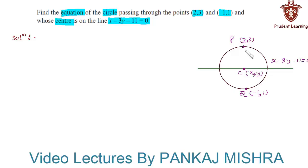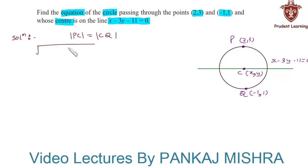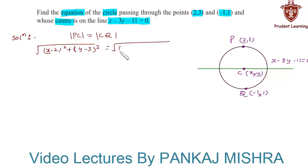We know that distance PC is equal to distance CQ, since both are the radius of the circle. So mod of PC equals mod of CQ. Hence by the distance formula we have: under root of (x minus 2) whole square plus (y minus 3) whole square equals under root of (x plus 1) whole square plus (y minus 1) whole square.